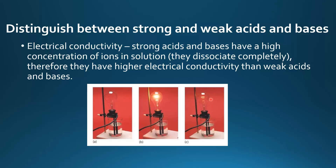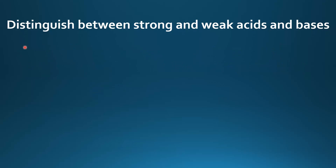On the right we have the bulb which is less bright, so this could be the weak acid or the weak base — they partially dissociate in solution giving a lower concentration of ions, so this solution has a lower electrical conductivity. And on the left the bulb doesn't light up at all, so this could be pure water.